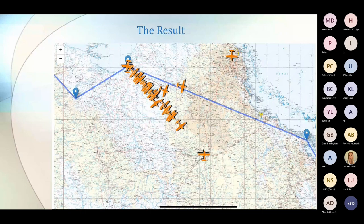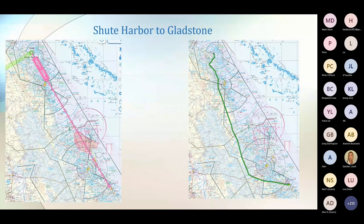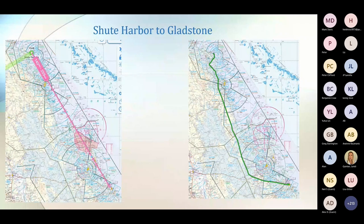One of the routes was between Bowen (Shute Harbour) and Gladstone. A direct line would have gone through Rockhampton and Mackay — all that controlled airspace — plus the Shoalwater Bay restricted area that was active at the time, shown as a red area just north of Rocky. The pink line shows the direct route; the green line shows where they avoided all the restricted areas by tracking inland. Not quite as scenic as tracking coastal, but the whole point is preparation: knowing where the controlled airspace is and working out where you're going to route around it.